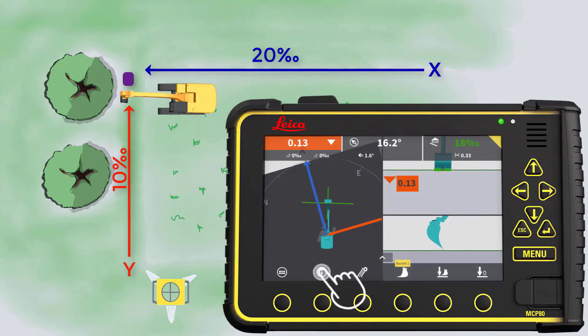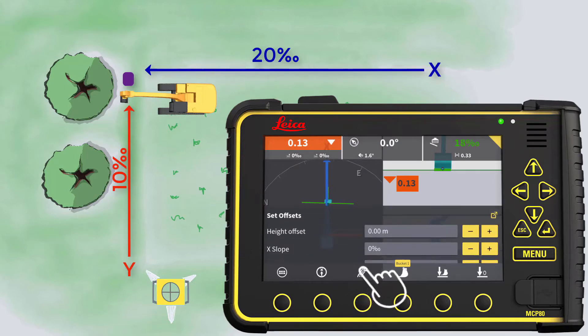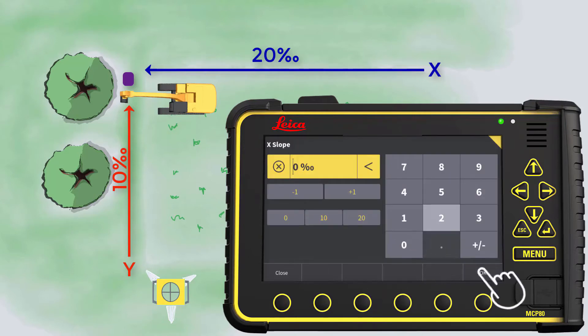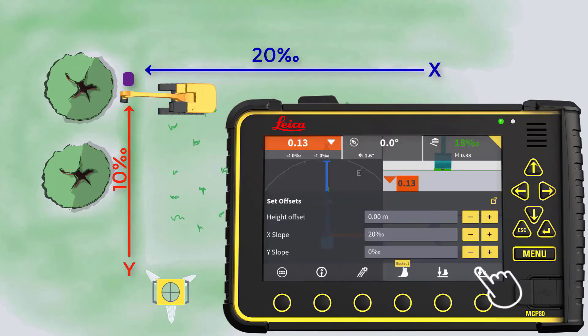On the panel, press x direction to orient your machine. To adjust the slopes according to the project, press the model options button. Enter the x slope, 20 percent. Enter the y slope, 10 percent.